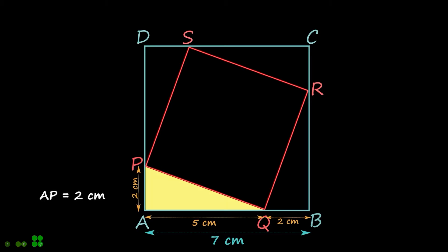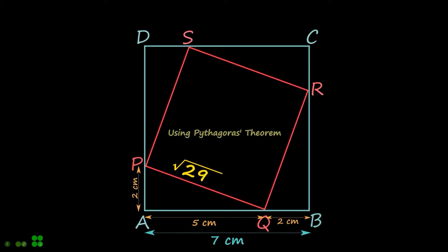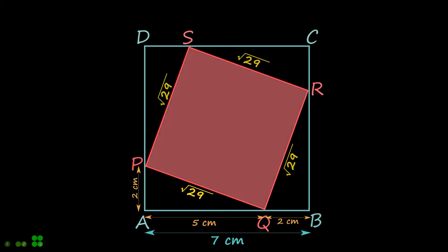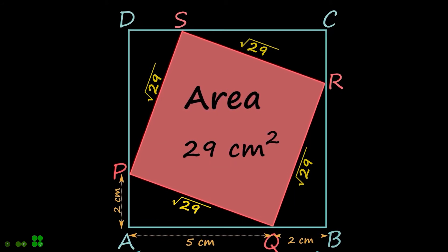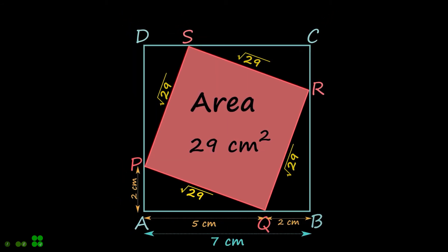Now using the Pythagoras theorem we can find the side length PQ. Finally, for the area of the square we multiply any two sides. So the required area is 29 cm squared.